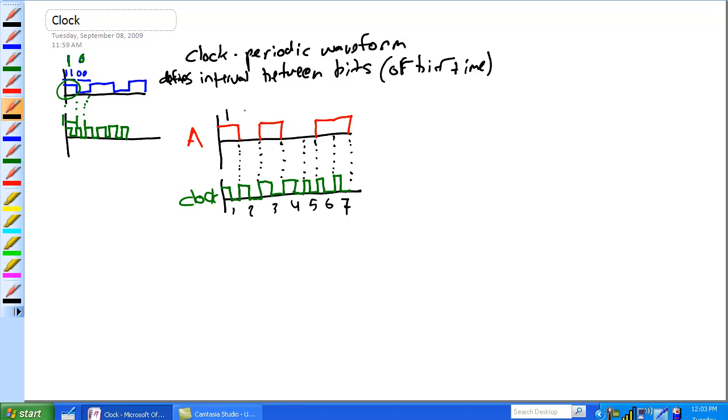A is a 1, 0, 1, 0, 0, 1, 1. So that's pretty easy there.